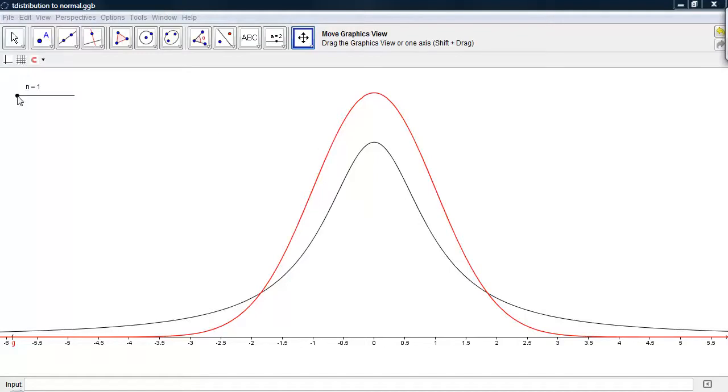I have the degrees of freedom set to 1 right now, and as we can see, the peak of the t-distribution is much lower than the normal distribution peak, but the tail ends are also much higher.